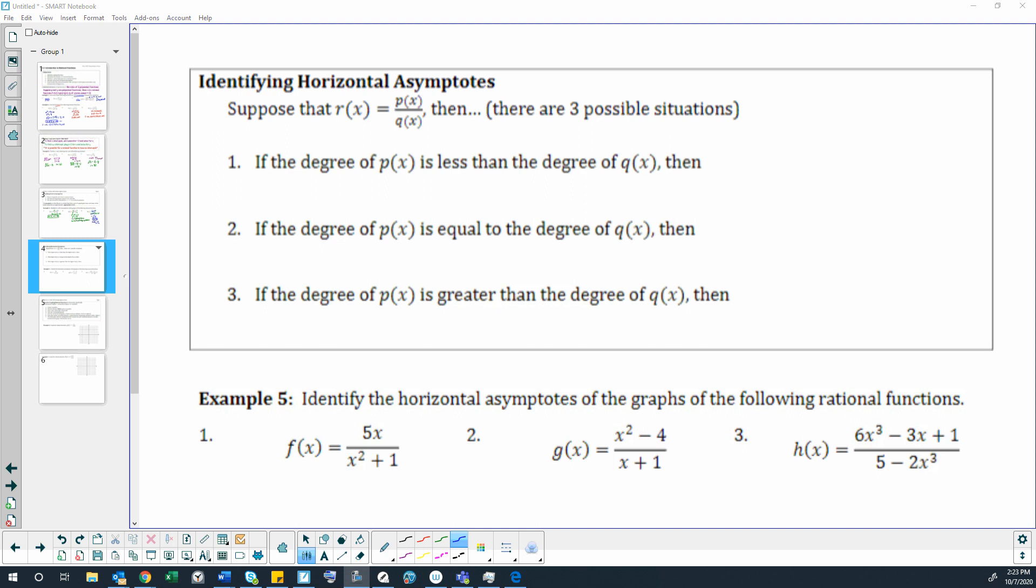Next we have tricky rules to remember for identifying horizontal asymptotes. We have three different situations for horizontal asymptotes. Suppose that our rational function r of x is equal to p of x over q of x. Then, if the degree of p of x is less than the degree of q of x, then our horizontal asymptote will be at y equals 0.